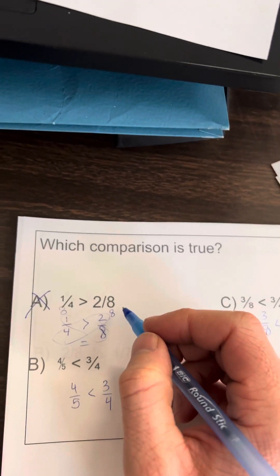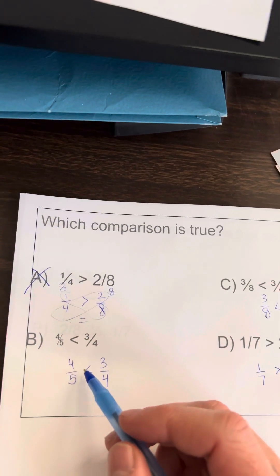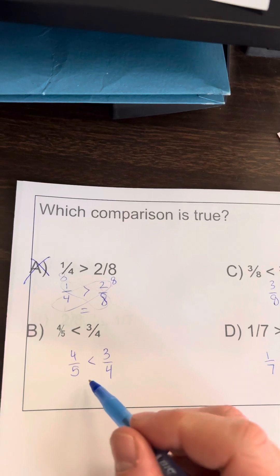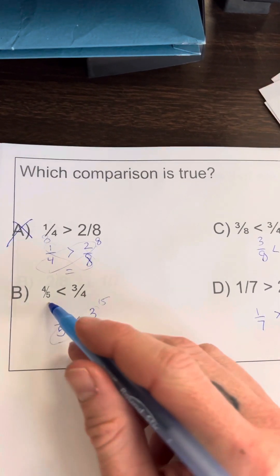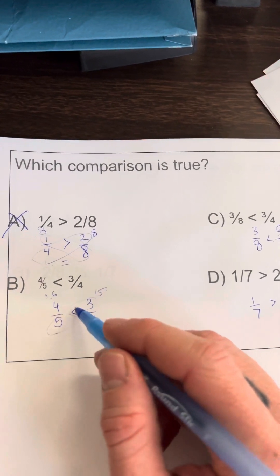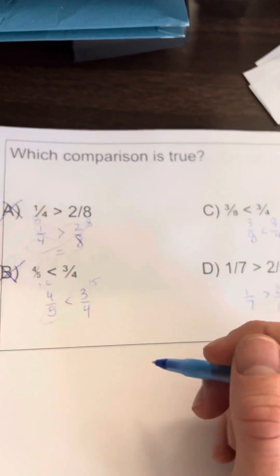Let's check B: four-fifths is less than three-fourths. Well, I can cross multiply. I see 16... 16 is bigger than 15. This says less than, so that's not true.